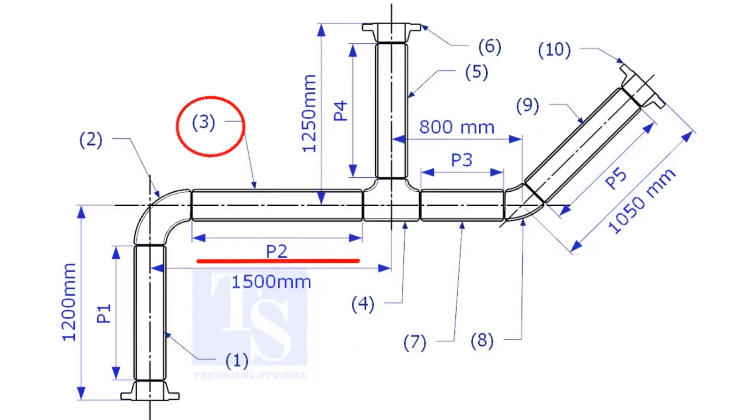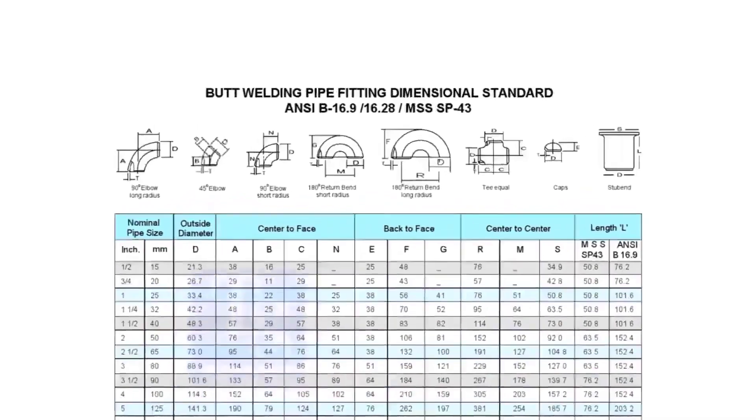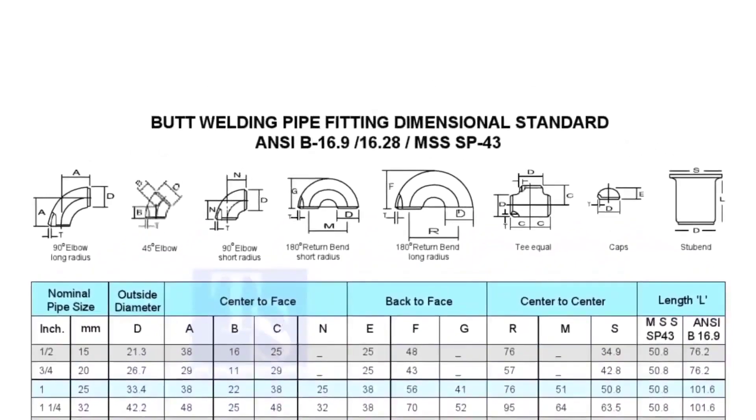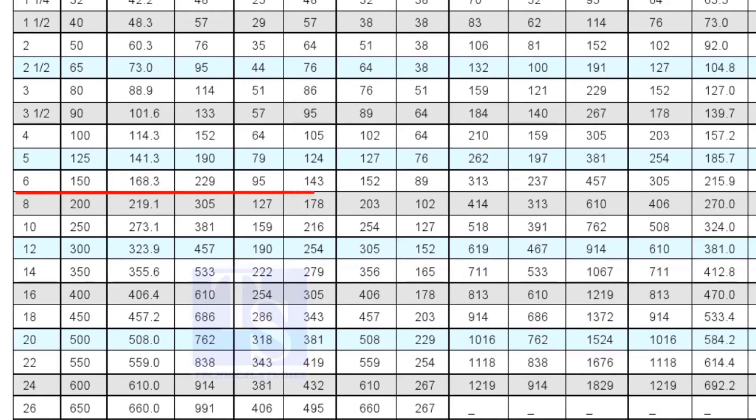Let us calculate the length of item number 3. We already know the takeoff length of the 6 inch long radius elbow. Now, check the chart for the takeoff length of the equal T. It is 143mm.